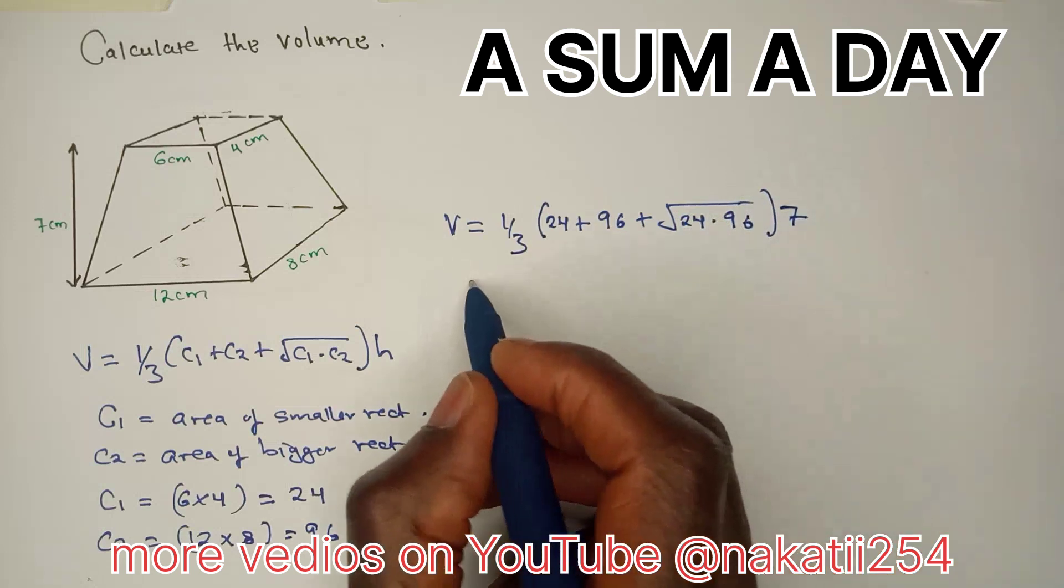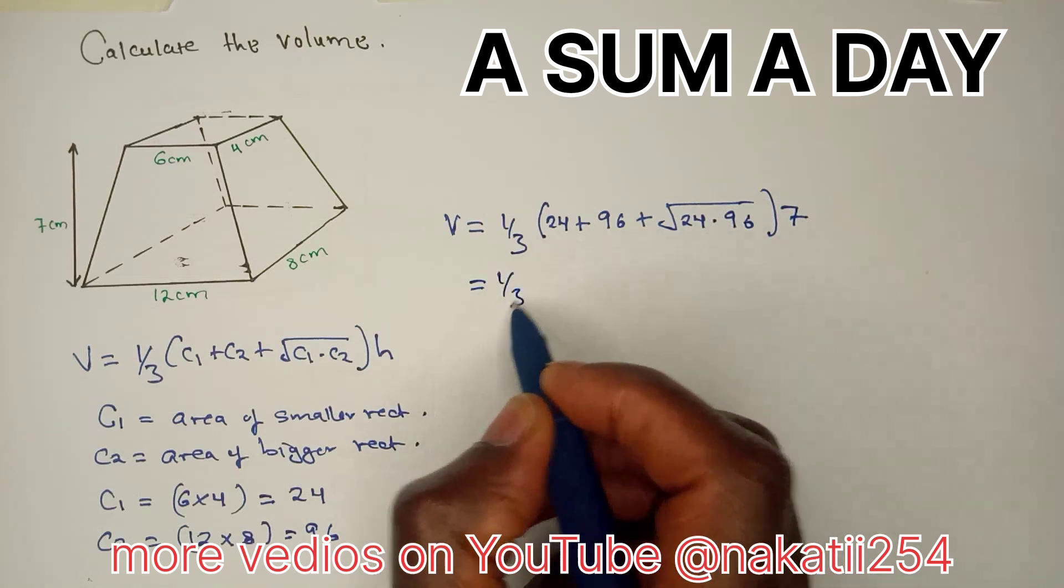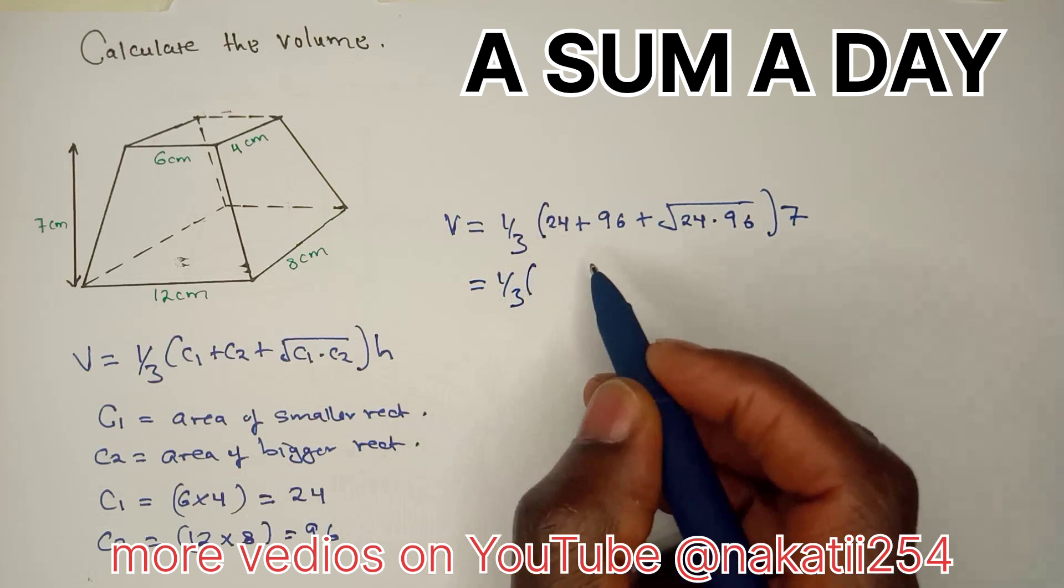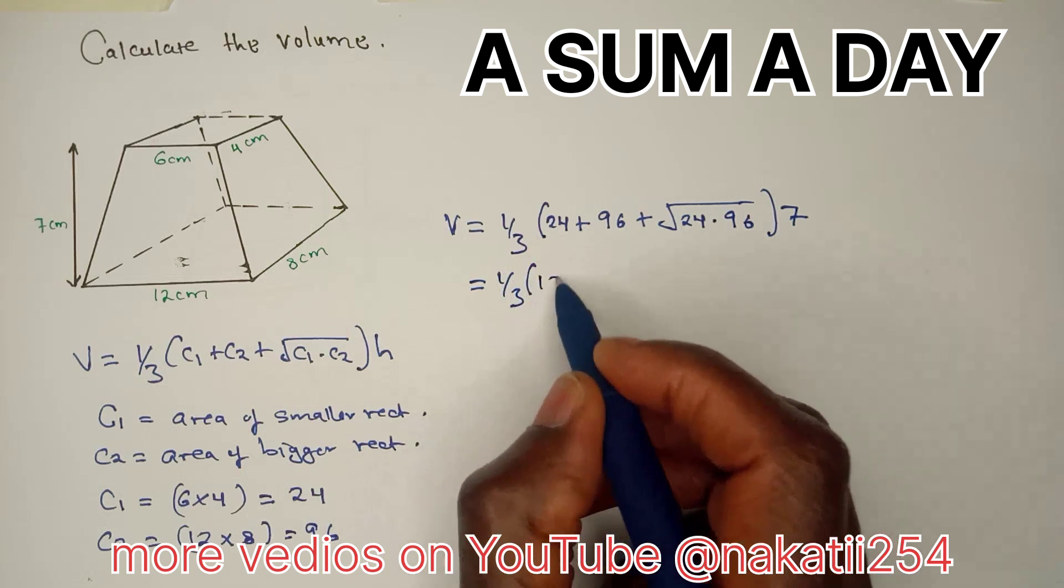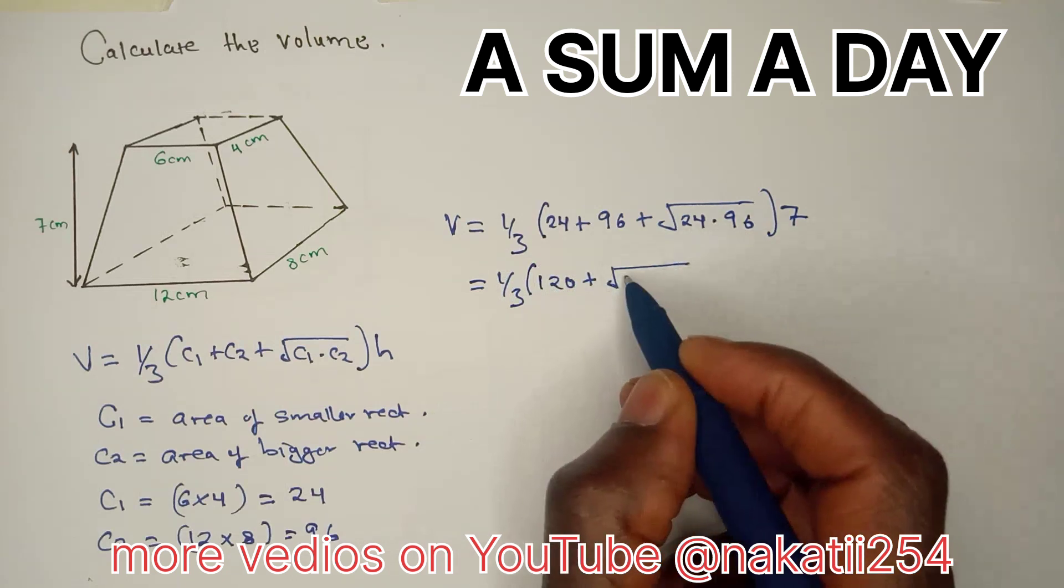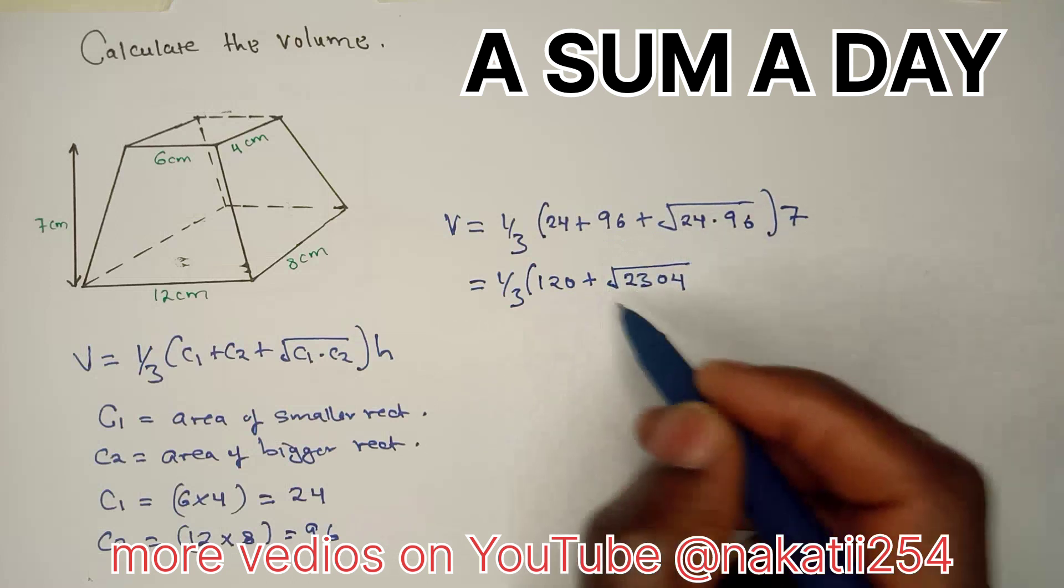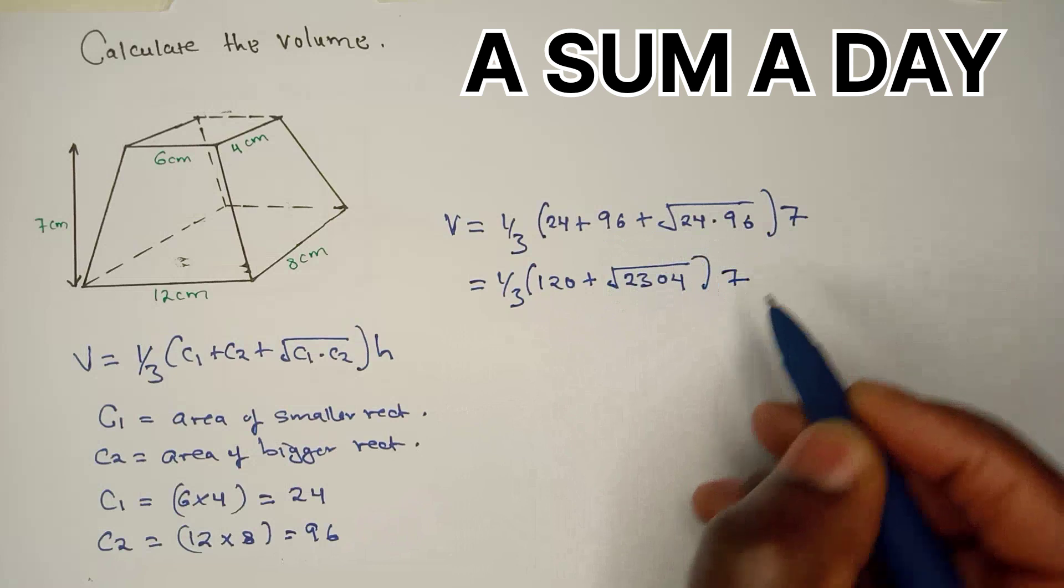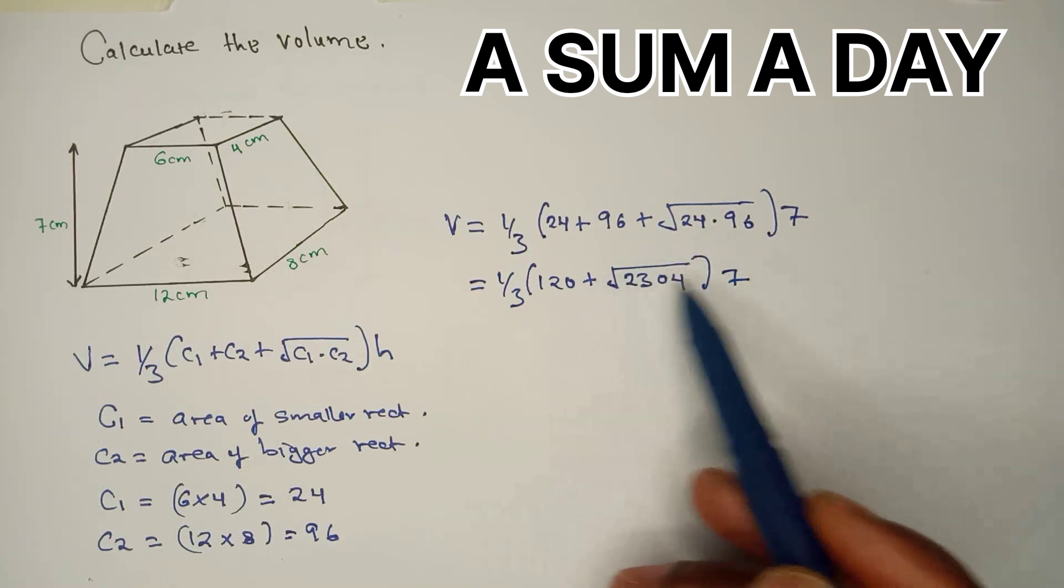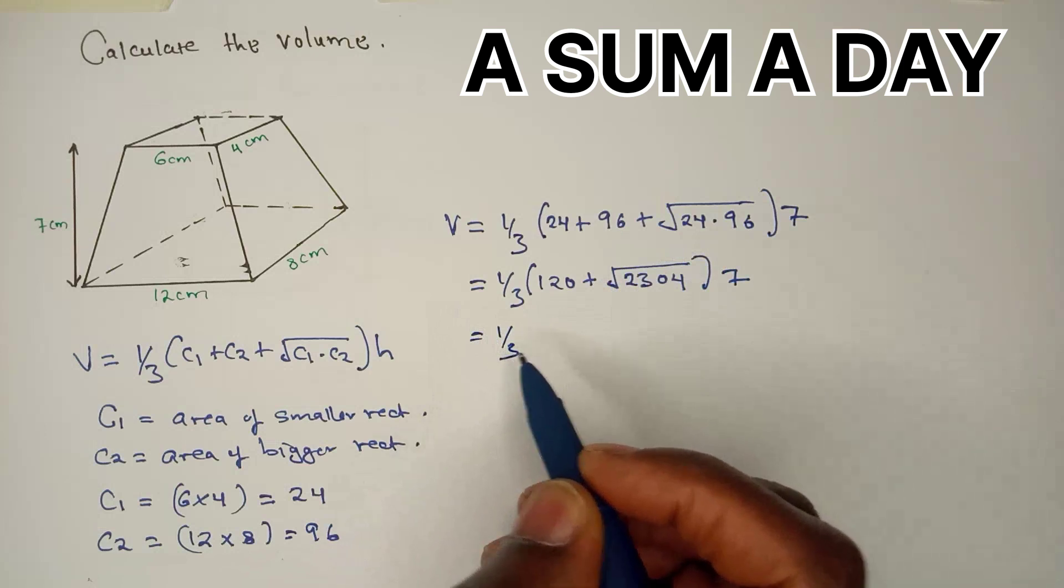Now simplifying that equation, we'll have one over three into 24 plus 96 is 120 plus 24 times 96. So we'll have the square root of 2304. Using your calculator, 24 times 96 is 2304 multiplied by 7.